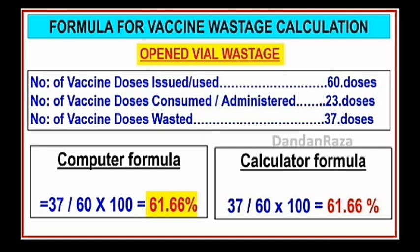Calculator formula: 37 divided by 60, multiplied by 100, is equal to 61.66.